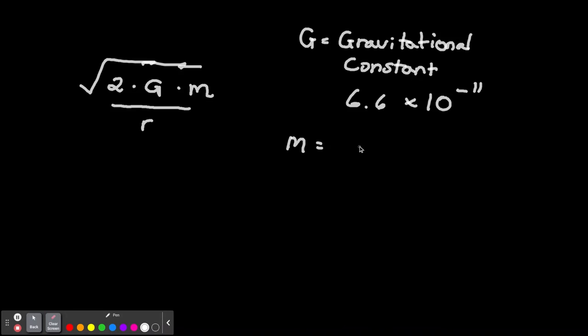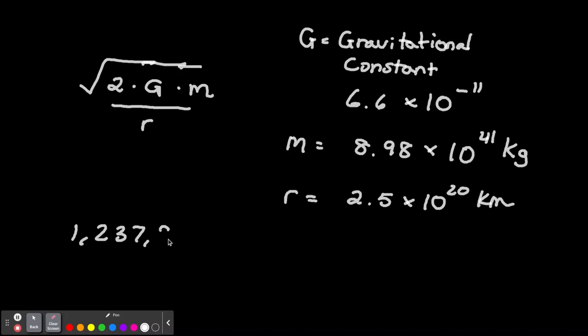The mass of the Milky Way is estimated to be 8.98 times 10 to the 41st kilogram. And the distance from the center, we're assuming now that Voyager 1 is 26,000 light years, or roughly 2.5 times 10 to the 20th kilometer. We take all that and we'll get an escape velocity of 1,237,807 miles per hour. Of course it would be a little more because we're trying to get to the edge of the galaxy, maybe another 40,000 light years.